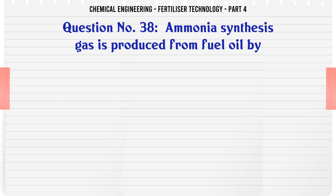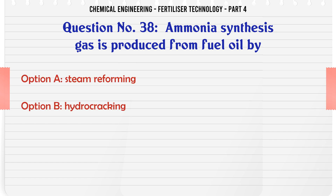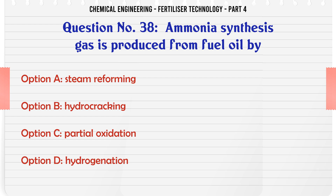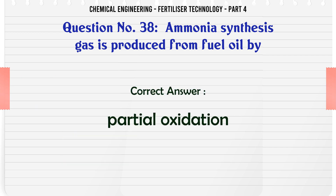Ammonia synthesis gas is produced from fuel oil by: a. steam reforming, b. hydrocracking, c. partial oxidation, d. hydrogenation. The correct answer is: partial oxidation.